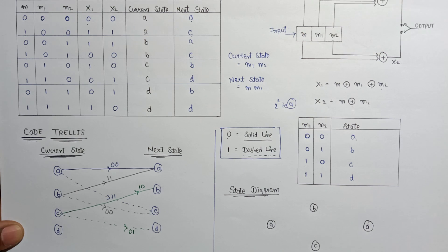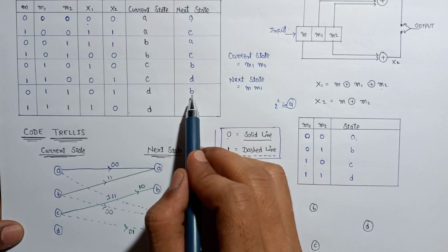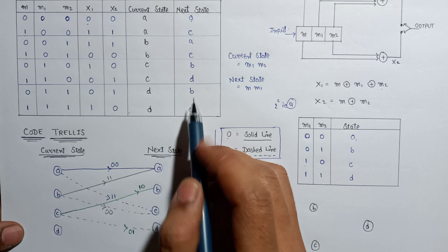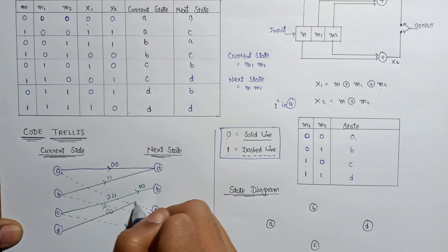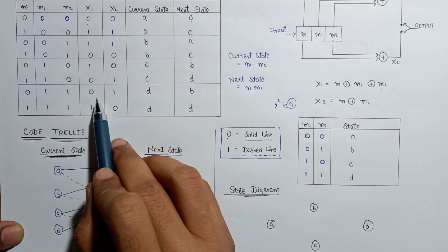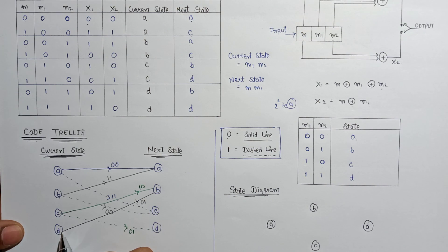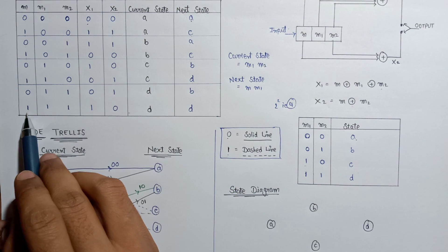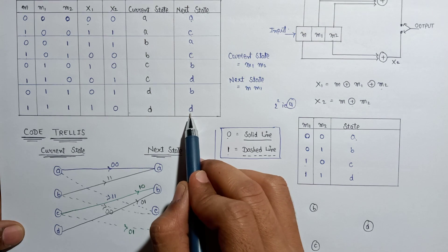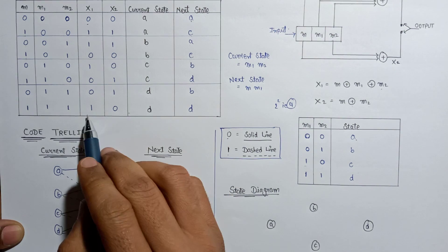Now let's plot it for state D. If the current state is D and the input message bit is 0, then the next state is B, represented by a solid line, and the output is 01. If the current state is D and the input message bit is 1, then the next state is D, represented by dashed lines, and the output is 10.